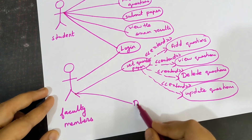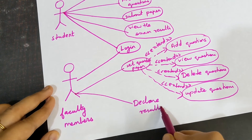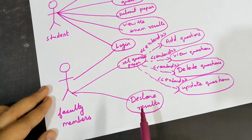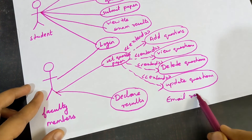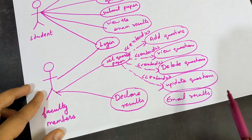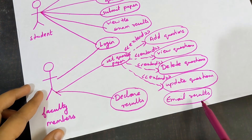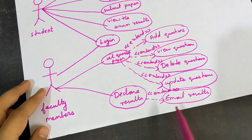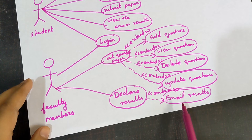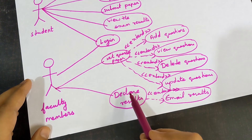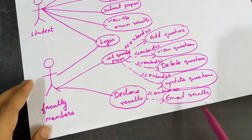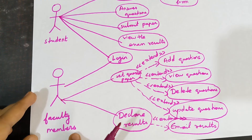The faculty member also has a Declare Results use case — connected directly to the faculty actor using a connector. Additionally, there is an Email Results use case, connected to Declare Results with the stereotype «extend». Emailing the results is not mandatory; if the faculty wants to share results via email they can, otherwise they can simply declare results in the portal and stop there.